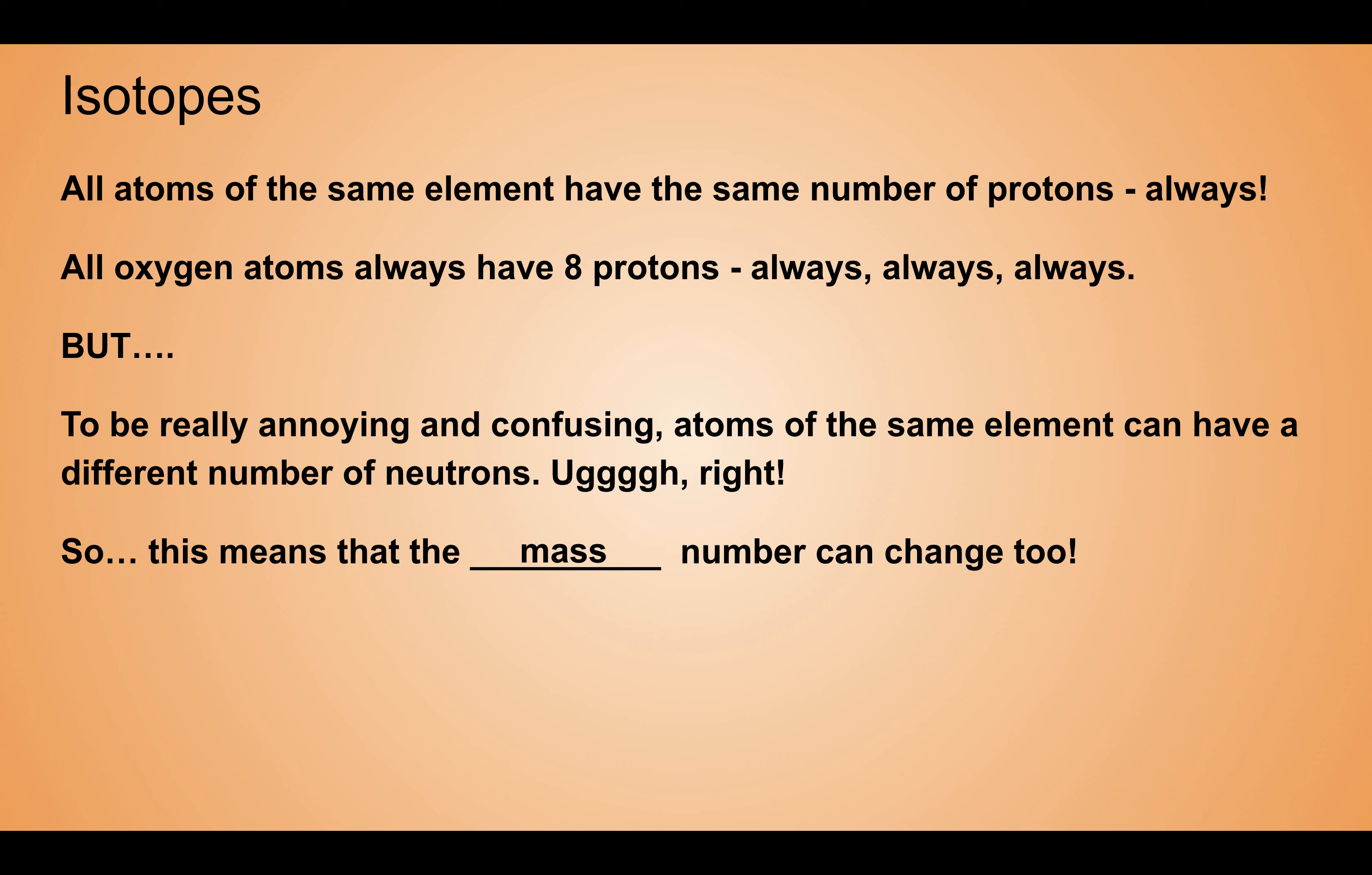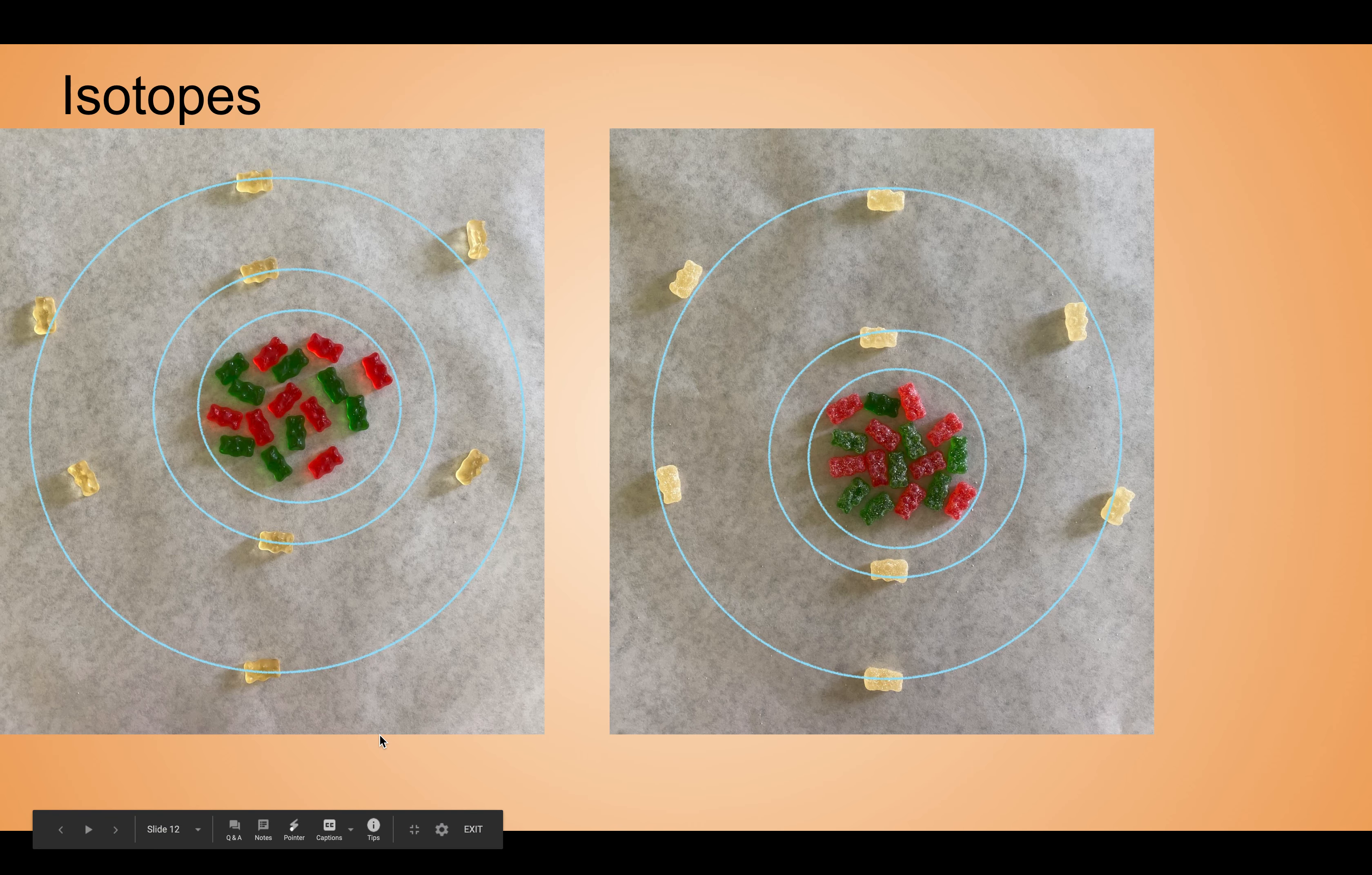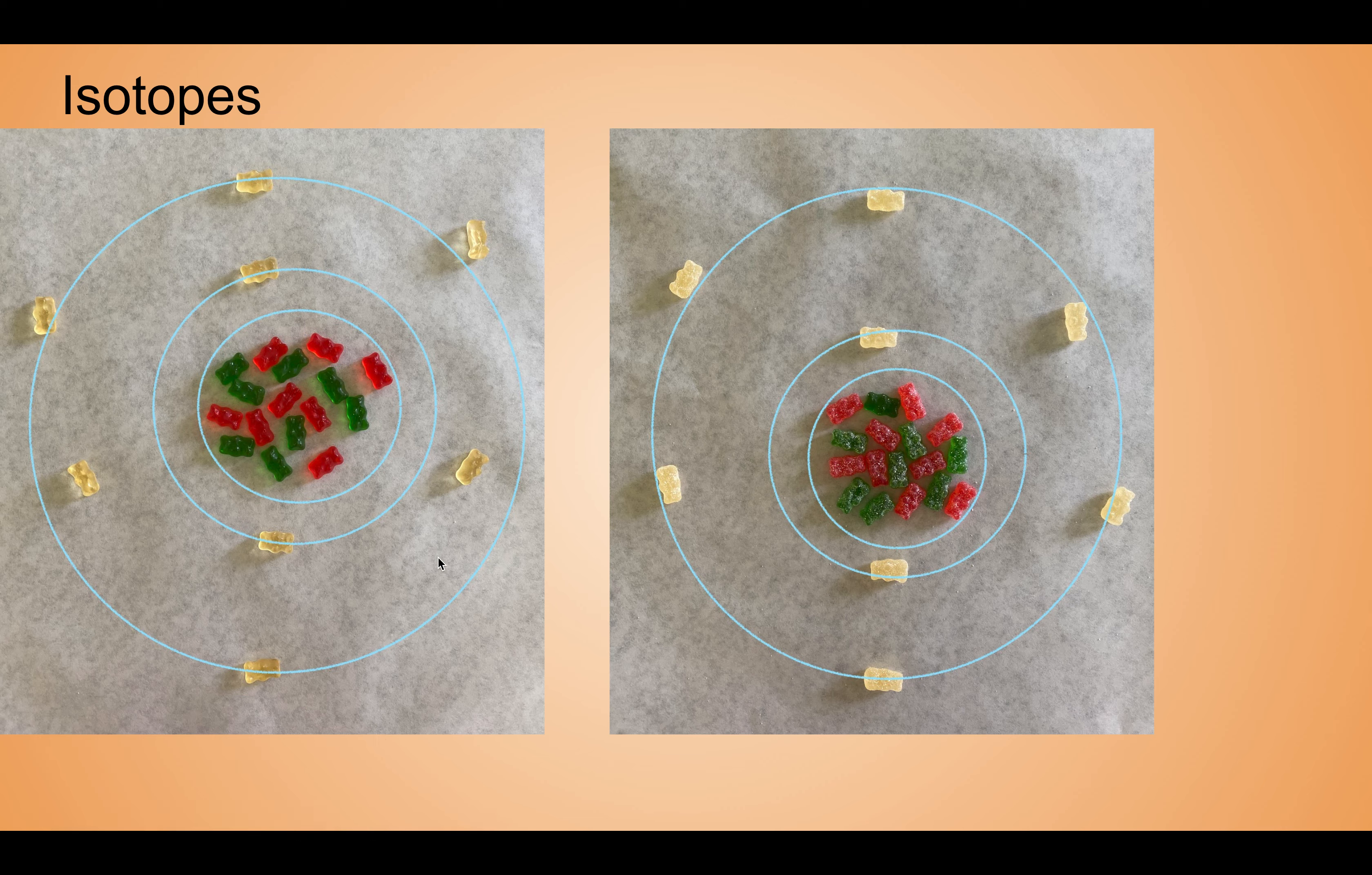Yep, mass number, right? Because it's changing the overall mass. If we have more or less of a neutron, it's going to change the mass. We're not really going to study isotopes very much in this class, but you do need to know that isotopes of an element can have different mass numbers because of the different amount of neutrons.